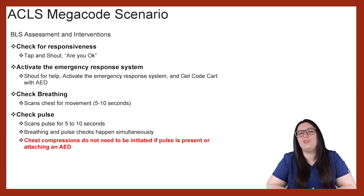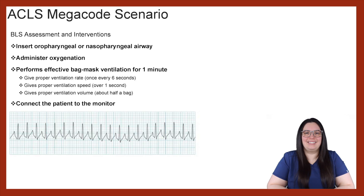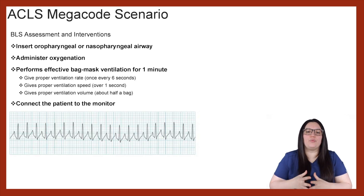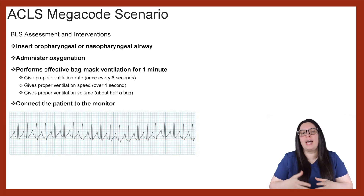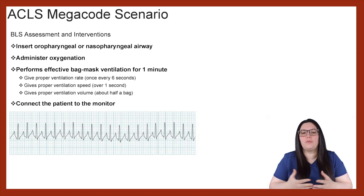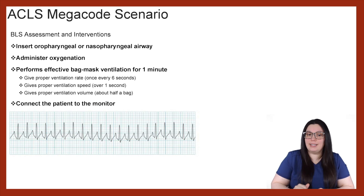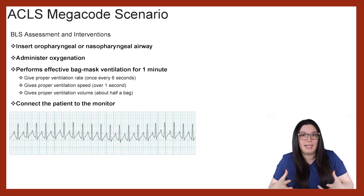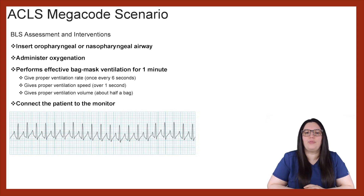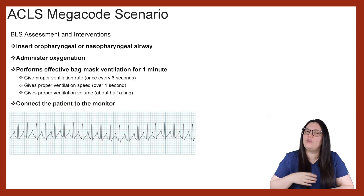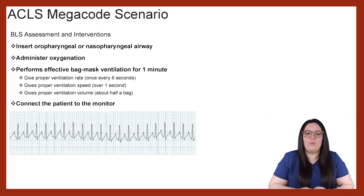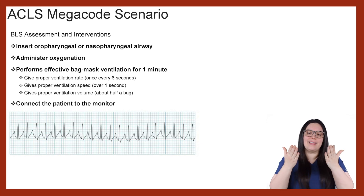The next thing we're going to do is attach an AED. Based on the scenario, this is really a breathing issue. So we want to immediately insert an oropharyngeal or nasopharyngeal airway and begin administering oxygen by performing effective bag-mask ventilation for at least one minute. We're going to give proper ventilation rates once every six seconds, over one second per breath, with proper ventilation volume — about half the bag. You don't need to compress the entire bag; just half will give them enough of a breath.